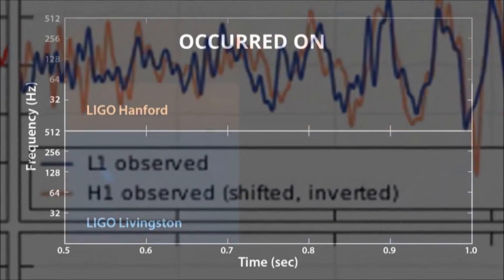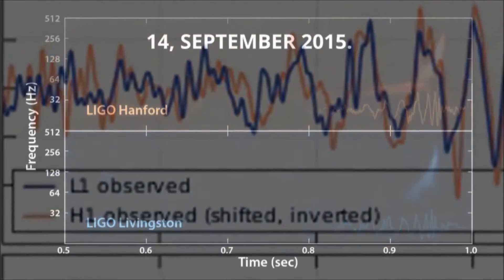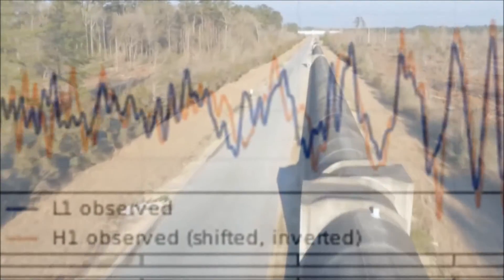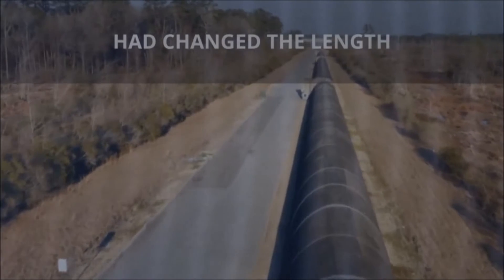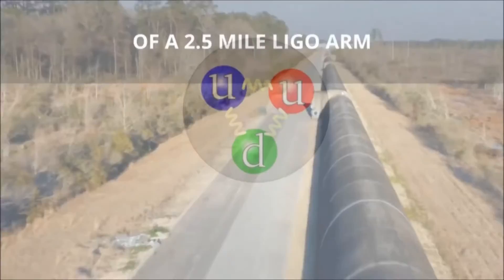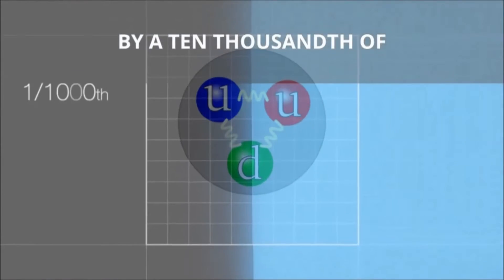The first detection occurred on September 14, 2015. The team reported that the detected gravitational wave had changed the length of a 2.5-mile LIGO arm by a ten-thousandth of the width of a proton.